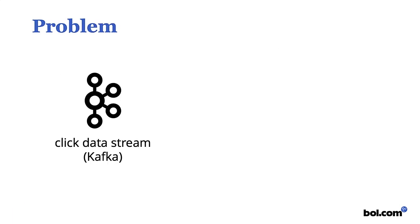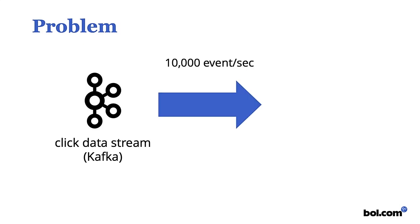So what's the actual problem? We have a Kafka cluster and click data streams — users clicking around, visiting pages — and all that data is stored in Kafka. We have around 10,000 events per second at peak, so we need a scalable solution, a distributed messaging queue. That's why we store it in Kafka. And we just want to get these events into immutable files on HDFS.